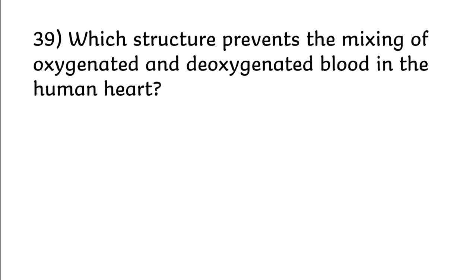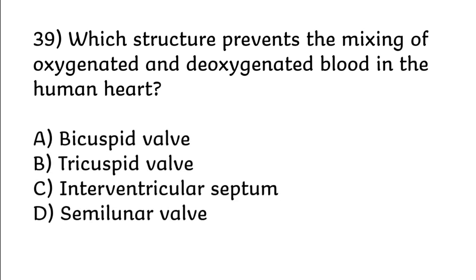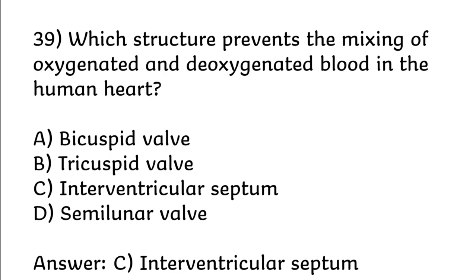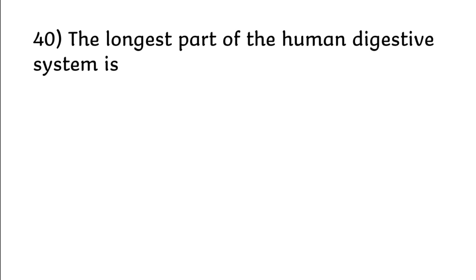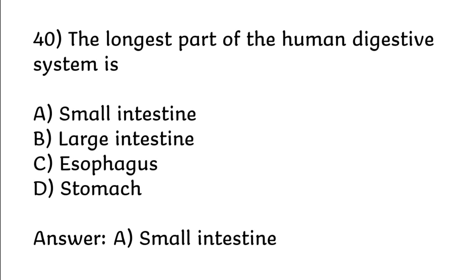Which structure prevents the mixing of oxygenated and deoxygenated blood in the human heart? Options: bicuspid valve, tricuspid valve, interventricular septum, semilunar valve. Correct answer is option C: interventricular septum. The longest part of the human digestive system is: small intestine, large intestine, esophagus, stomach. Correct answer is option A: small intestine.